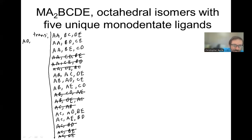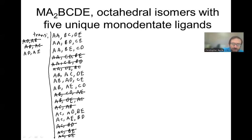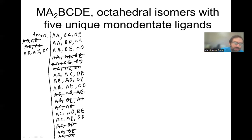Now the AD combinations. AD|AB and AD|AC are already written above. But AD|AE forces BC — we don't have any AD|AE combination anywhere, so that is new. So far we have 1, 2, 3, 4, 5, 6, 7, 8, 9 — that turns out to be all of them. From here on out, they're going to be redundant.